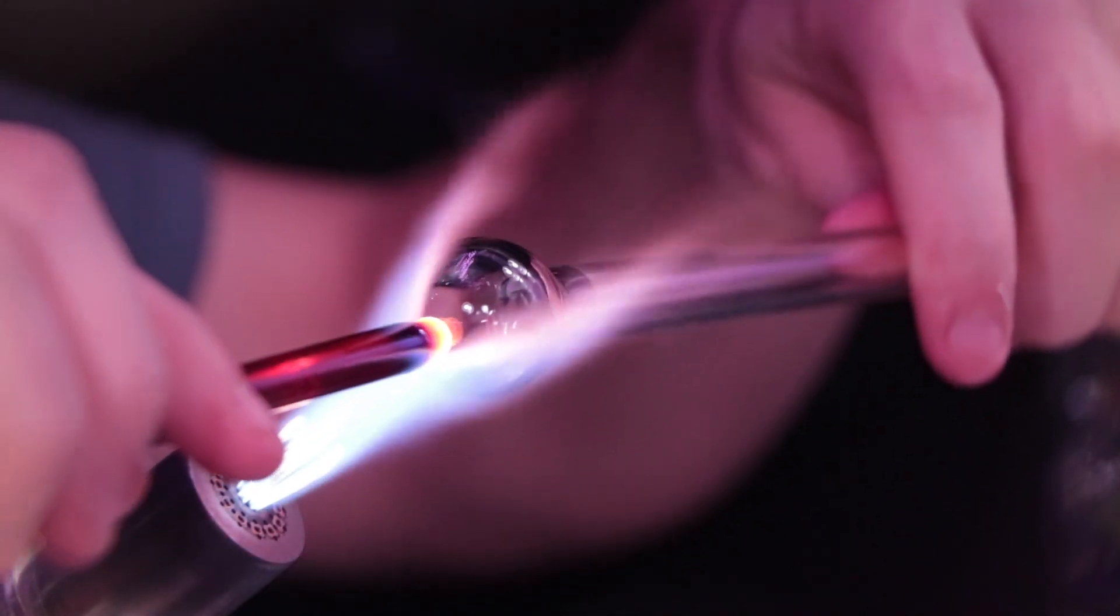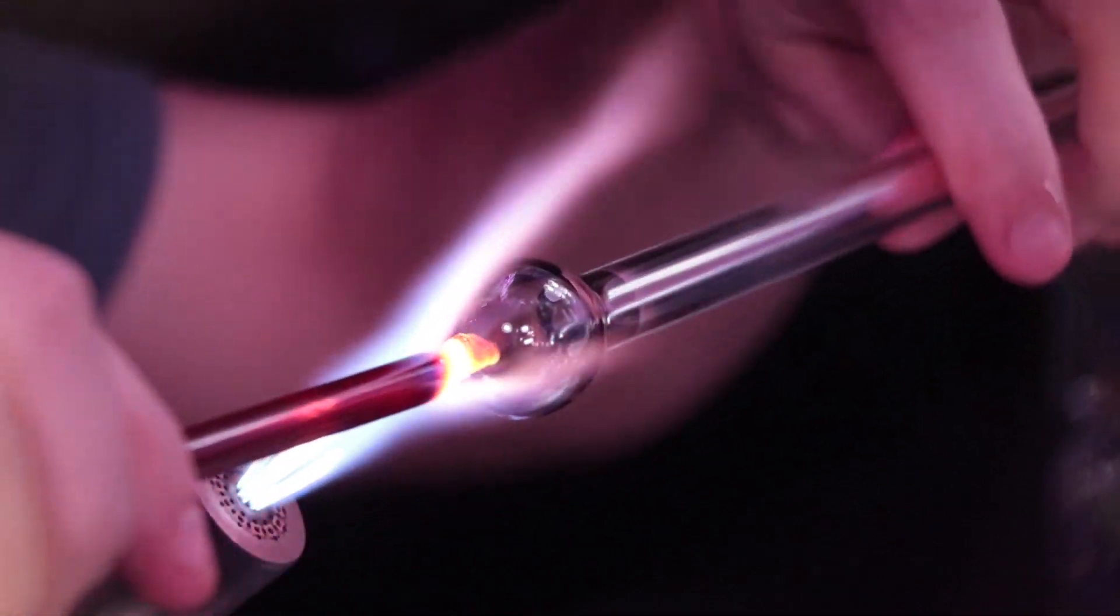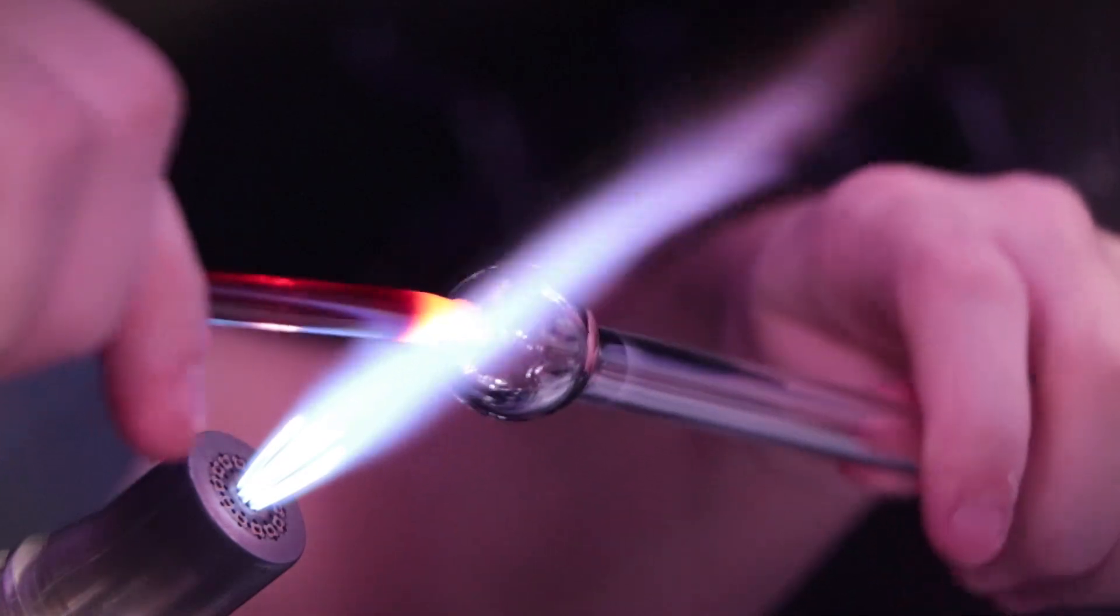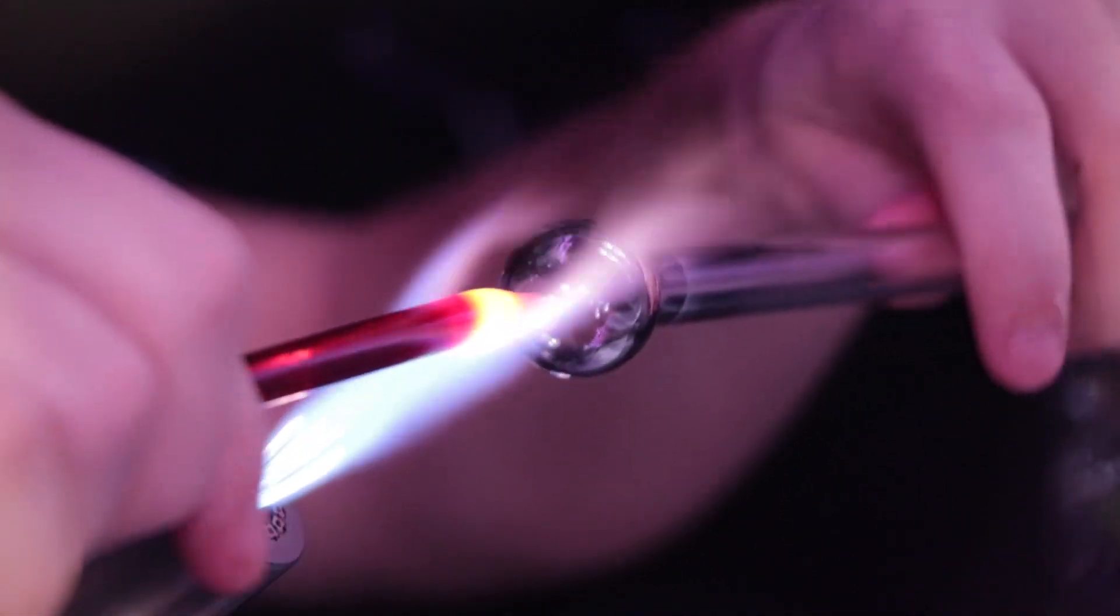And now I'm heating up the end of a colored rod and the bulb very very hot, and attaching them together. The colored rod will act as a weight. Now I'm heating up the rod as I'm going down it and pulling it out a little bit.